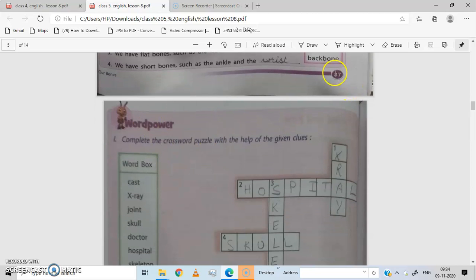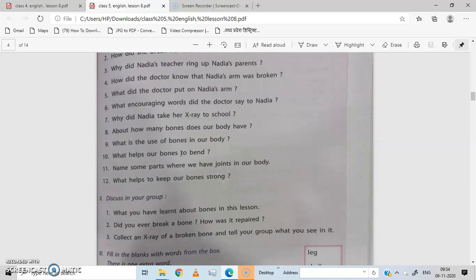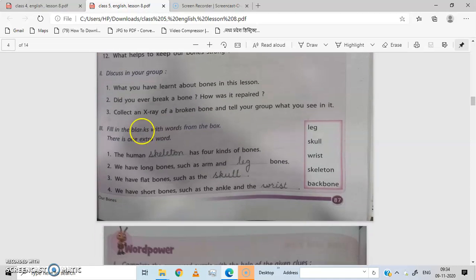Take out page number 87. Question number 1, answer the following questions. This answer the following we will do in our notebook. So move on straightly, move on to question number 3, fill in the blanks with words from the box. Here is a box with following words: leg, skull, wrist, skeleton, and backbone. You have to choose correct words from these blanks and fill this blanks.